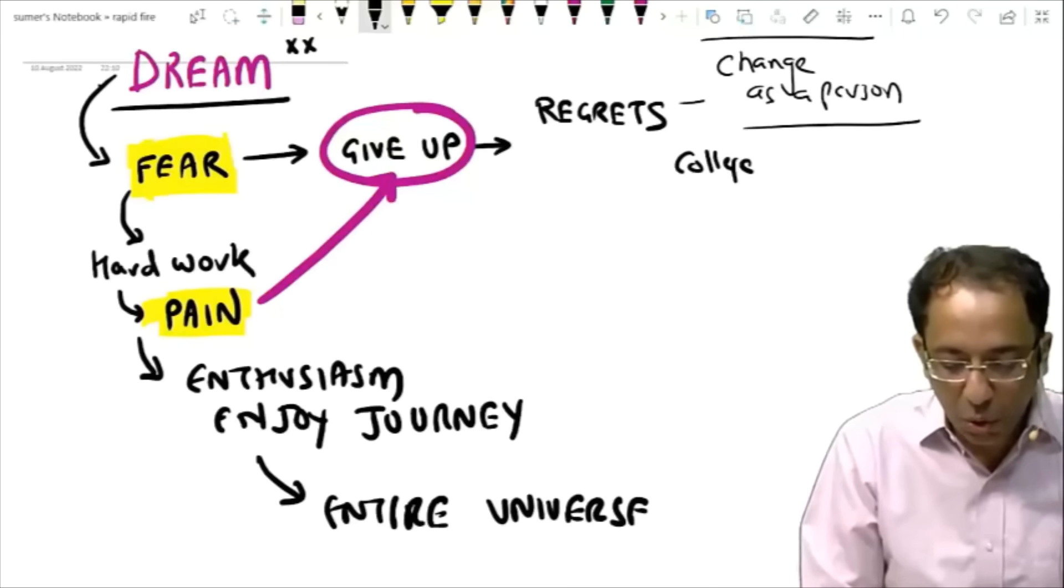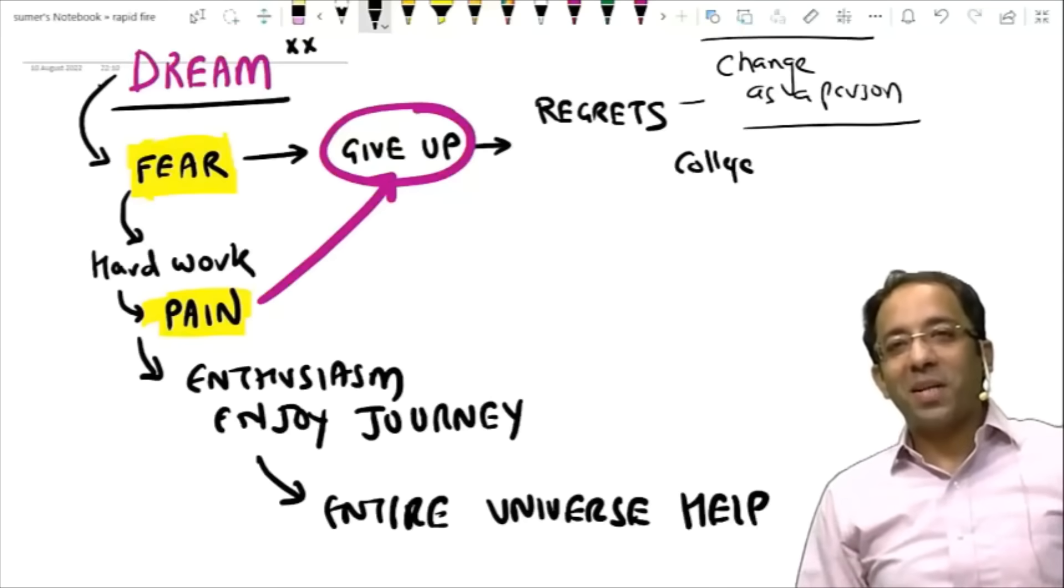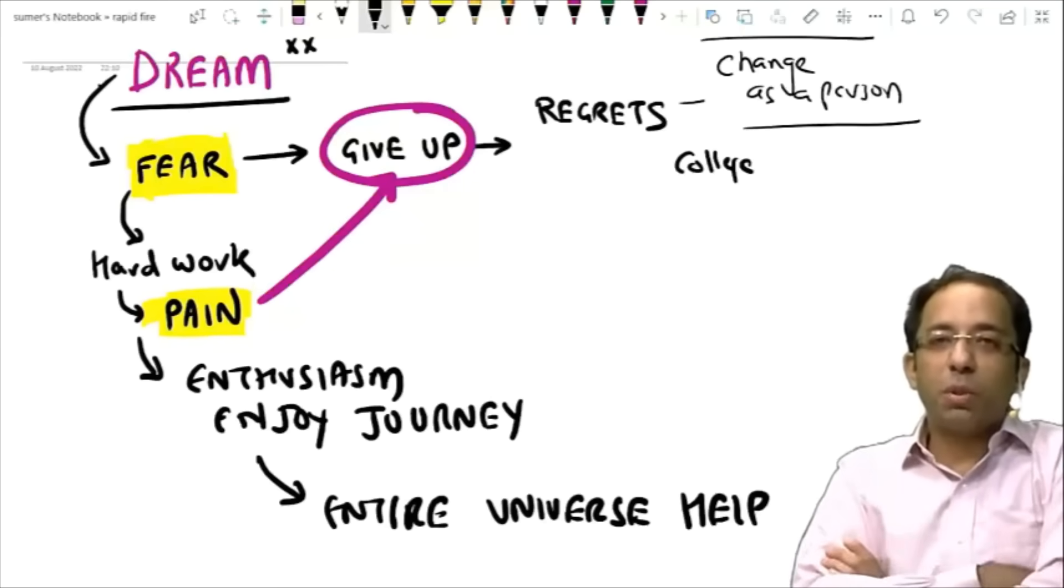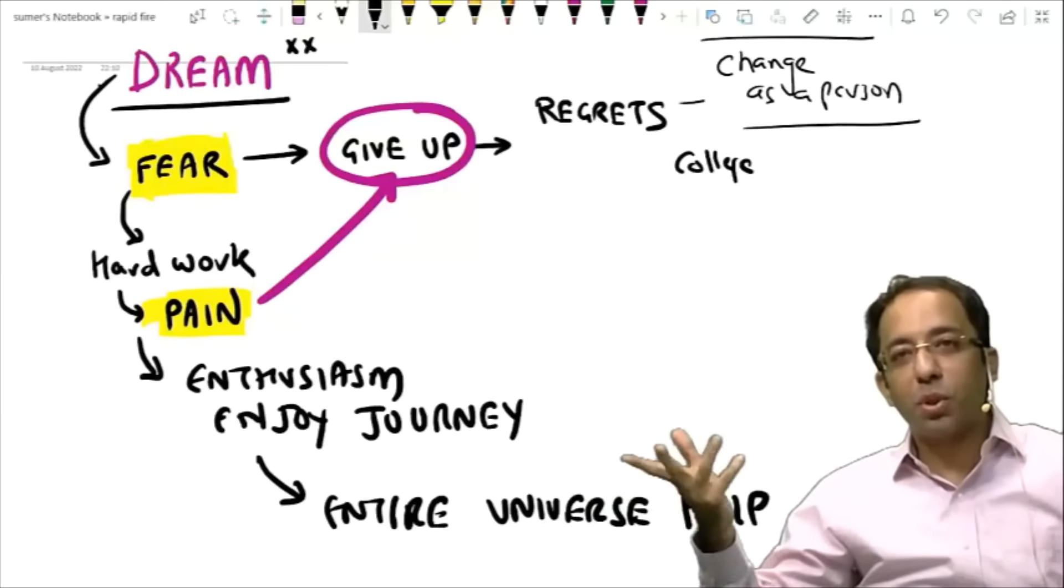Sab kuch thik hona shuru ho jayega. Jo bhi aaj galat ho raha, sab thik hona shuru ho jayega. Abhi lag raha, sabhi mere khilaf hai. Aisa nahi. I keep meeting students who will say, Sir family is also not supporting, college is also not supporting, government is also not supporting, country is also not supporting. What to do?